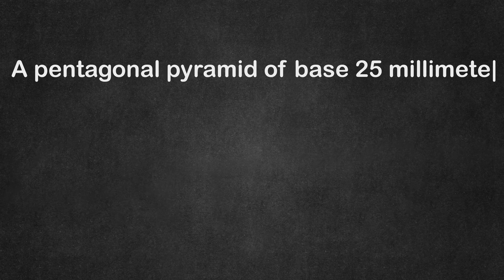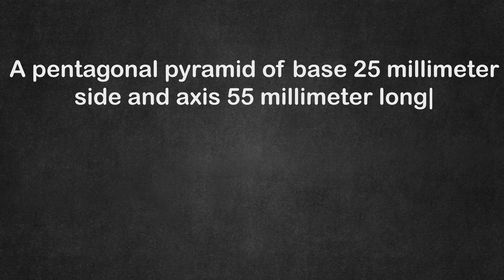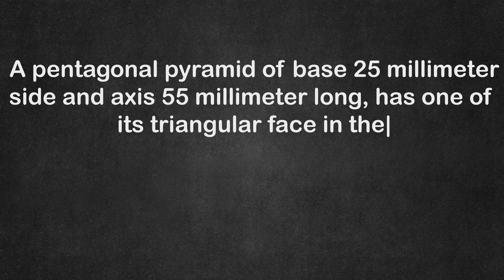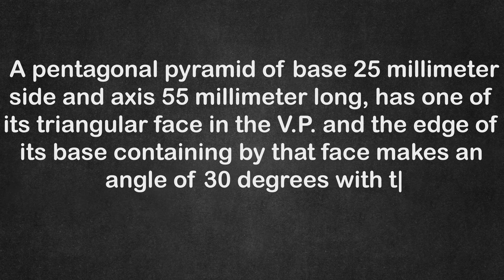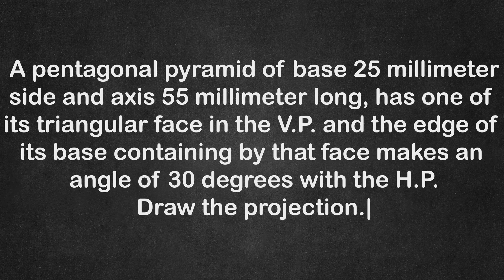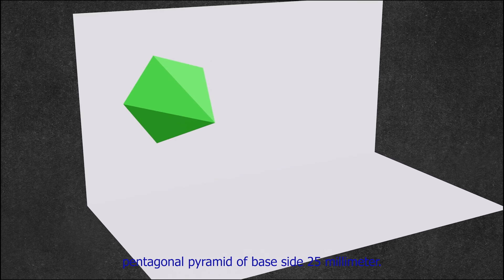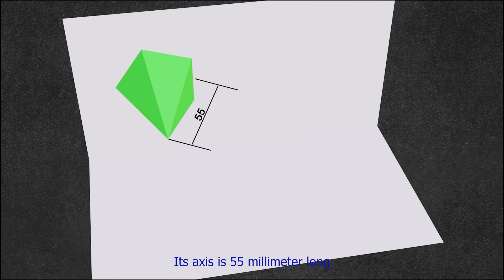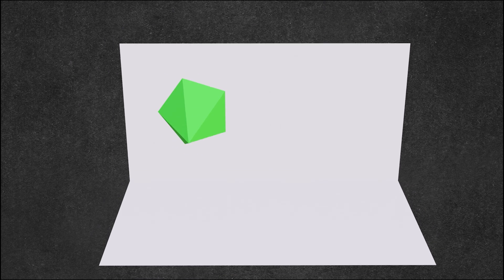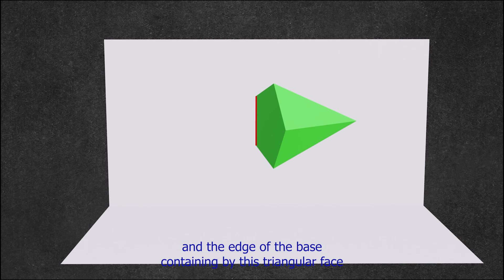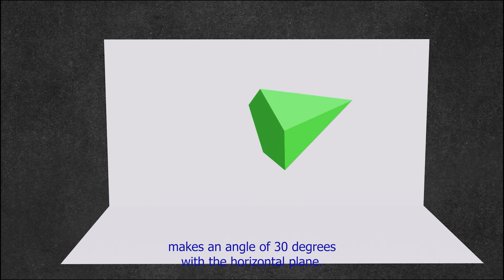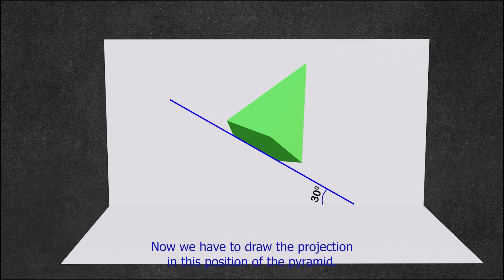A pentagonal pyramid of base 25mm side and axis 55mm long has one of its triangular faces in the VP, and the edge of its base contained by that face makes an angle of 30 degrees with the HP. This is the required pentagonal pyramid resting on one of its triangular faces on the vertical plane, and the edge of the base containing that triangular face makes an angle of 30 degrees with the horizontal plane. We have to draw the projection in this position.